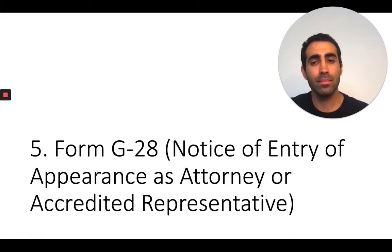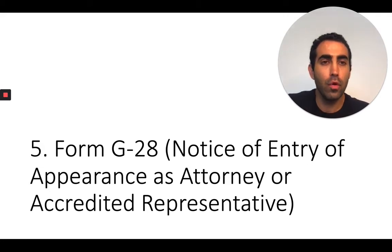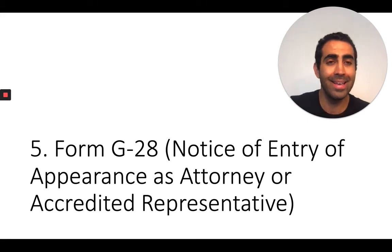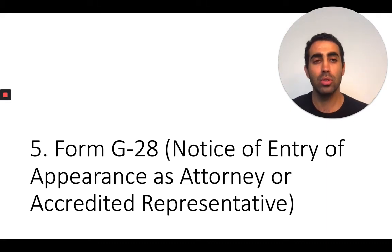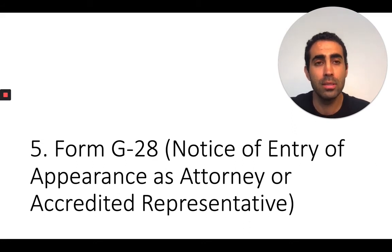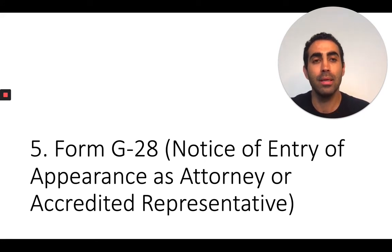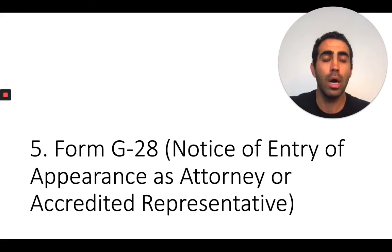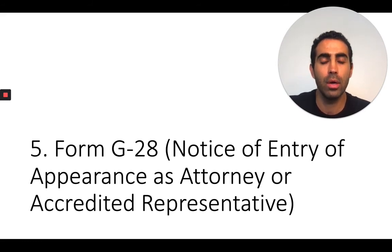The fifth form is called the Form G-28. This form is only required if you're working with an attorney. The Form G-28 is the form that both the attorney and you sign, and it allows the attorney to act on your behalf — communicating directly with USCIS, receiving various notices at the attorney's office, and representing you. The G-28 is also called the Notice of Entry of Appearance as Attorney or Accredited Representative.